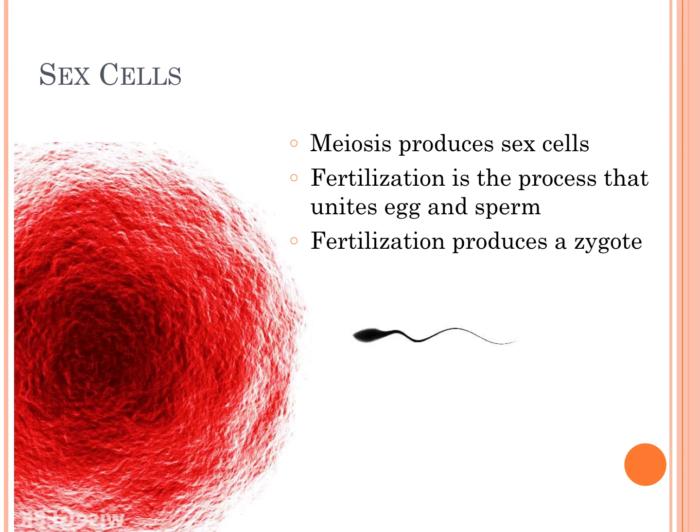Once meiosis has completed, the sex cells are created. A sperm and an egg come together and form a zygote through fertilization.